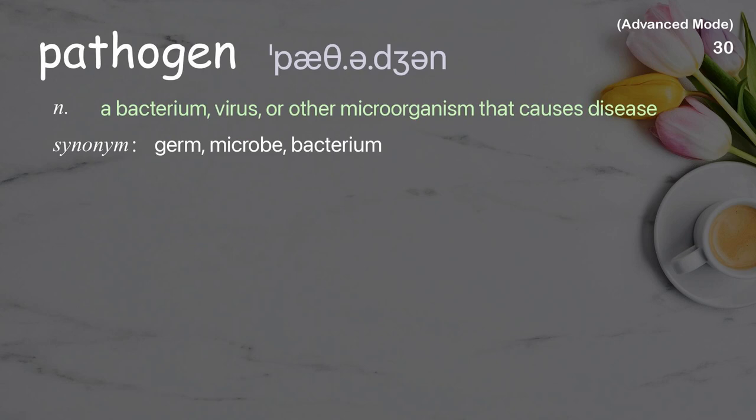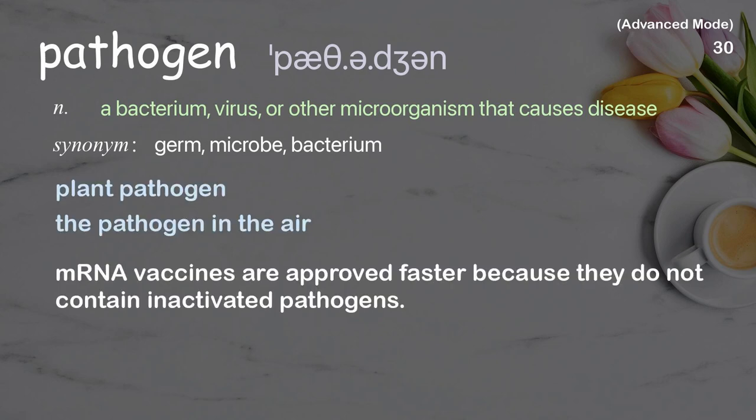Pathogen: A bacterium, virus, or other microorganism that causes disease. Examples: plant pathogen, the pathogen in the air. mRNA vaccines are approved faster because they do not contain inactivated pathogens.